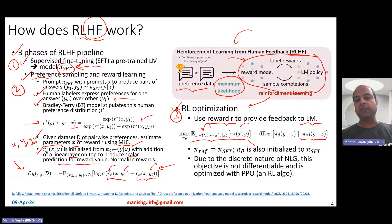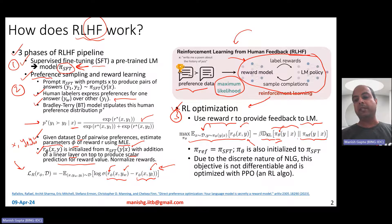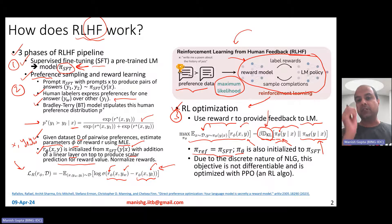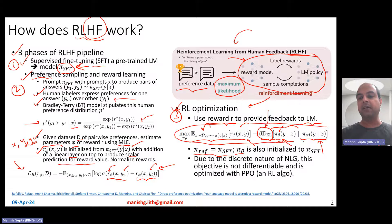Since language generations are discrete in nature, this objective is not differentiable, which is why you need a reinforcement learning algorithm for these updates. The popular algorithm used is PPO, though reinforce is also used. PI-reference is set to PI-SFT itself, and PI-Theta is initialized using PI-SFT, so at the beginning the divergence is very low, and the model tries to maximize reward while keeping KL divergence small.